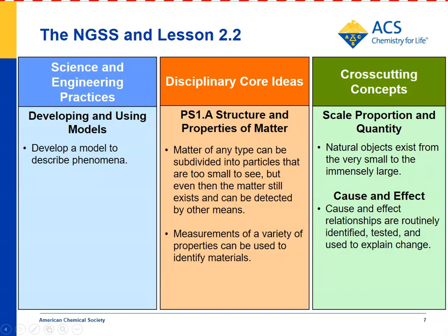For the foundation boxes: Science and Engineering Practices — Developing and Using Models — students examine molecular models of the liquids as an explanation for why the liquids have different properties. For structure and properties of matter, matter can be subdivided into particles; students look at the particle level of liquids and use a variety of properties to identify them — whether a liquid beads up on wax paper, absorbs into construction paper, or makes food coloring move on filter paper. For crosscutting concepts — scale, proportion, and quantity — natural objects exist from the very small to the immensely large. Students examine matter on the molecular level, and explore cause and effect: substances can be tested and unknowns identified based on their characteristic properties.